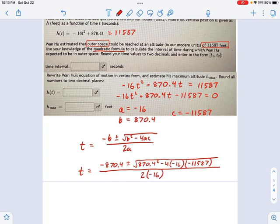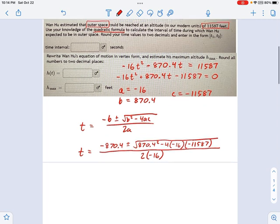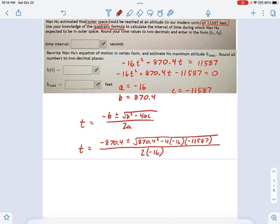When you do that, you're going to get two numbers. These two numbers happen because of this plus or minus right here. First, you would do negative 870.4 plus that huge square root. Then you would do negative 870.4 minus the square root. I'm not going to go through all the details. You can do that with the calculator.